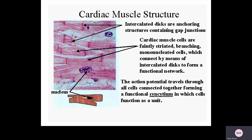Cardiac muscle looks vaguely similar to skeletal muscle because it is also striated, which means they have a similar contraction mechanism. Cardiac muscle cells are involuntary. They branch, and that branching is important because it allows the heart to act like a functional syncytium. They are also uninucleated. In addition, they have what are known as intercalated disks. Those intercalated disks are specialized structures that aid with anchoring between cardiac muscle cells, and they also contain specialized gap junctions, which are for intercellular communication.